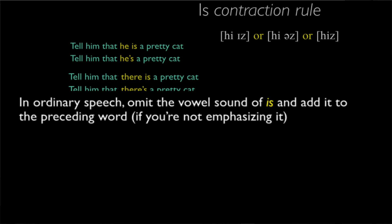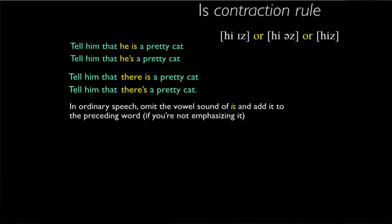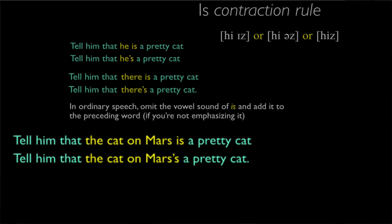However, it's not quite that simple. If it were, we would expect to be able to get three pronunciations of something like 'tell him that the cat on Mars is a pretty cat.' In addition to the way I just pronounced it, we should be able to reduce the vowel of 'is' to get 'tell him that the cat on Mars is a pretty cat.' And in fact, we can do that.